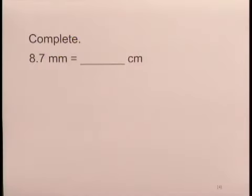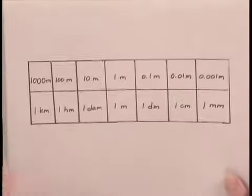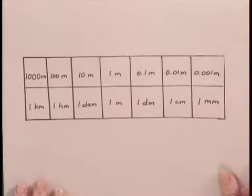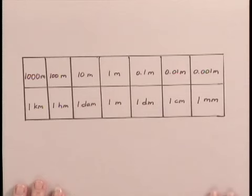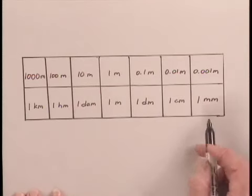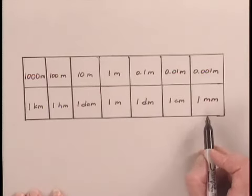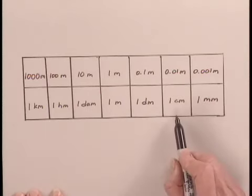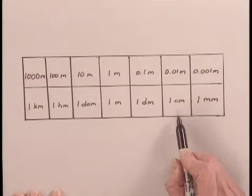We'll convert 8.7 millimeters to centimeters in this exercise. We can do the conversion mentally by thinking of the table of metric equivalence and recognizing that when we go from millimeters to centimeters in the table, we move one place to the left.